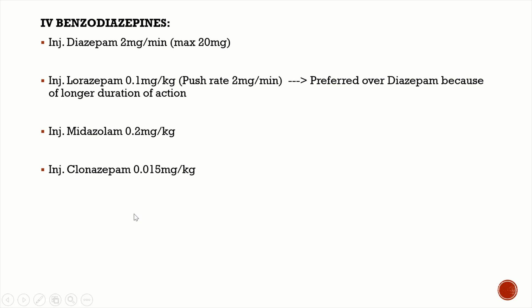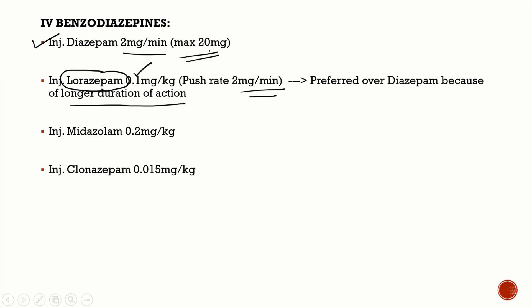Next, give IV benzodiazepines — do not rush directly to phenytoin infusion. The benzodiazepine of choice is lorazepam, because it has a longer duration of action, at a dose of 0.1 mg/kg with a maximum push rate of 2 mg/minute. You can also give diazepam at 2 mg/minute up to a maximum of 20 mg, midazolam at 0.2 mg/kg, and clonazepam at 0.015 mg/kg.